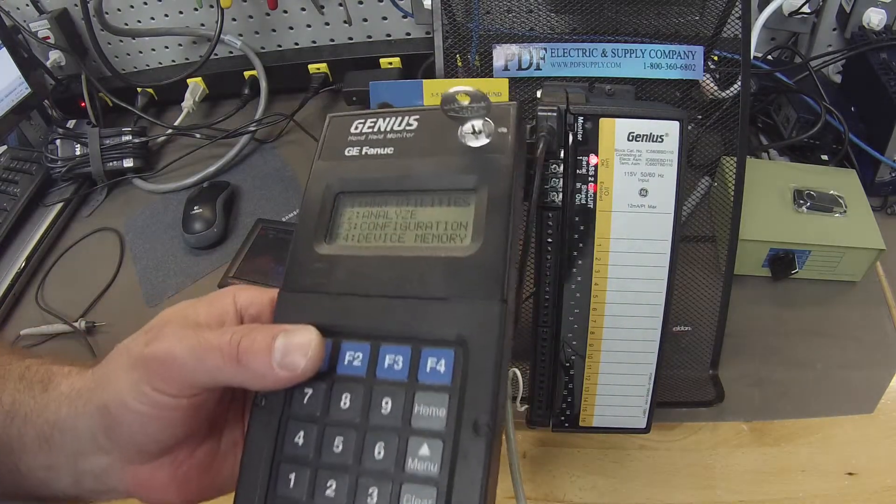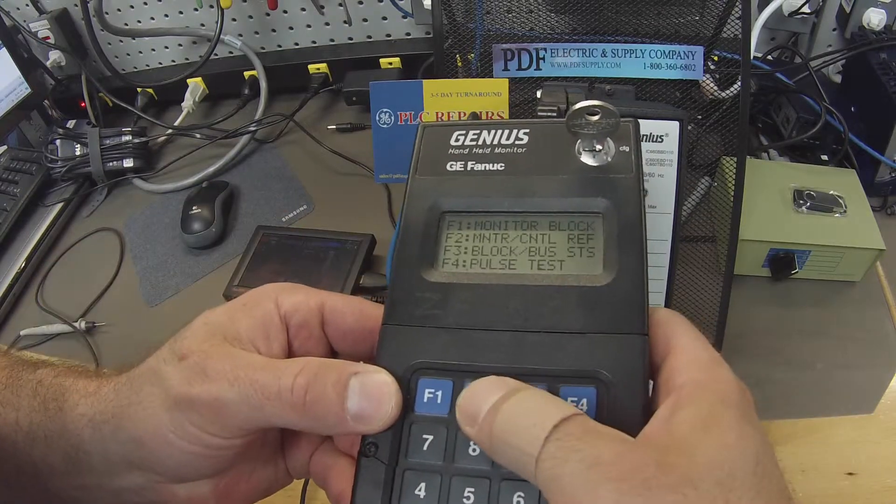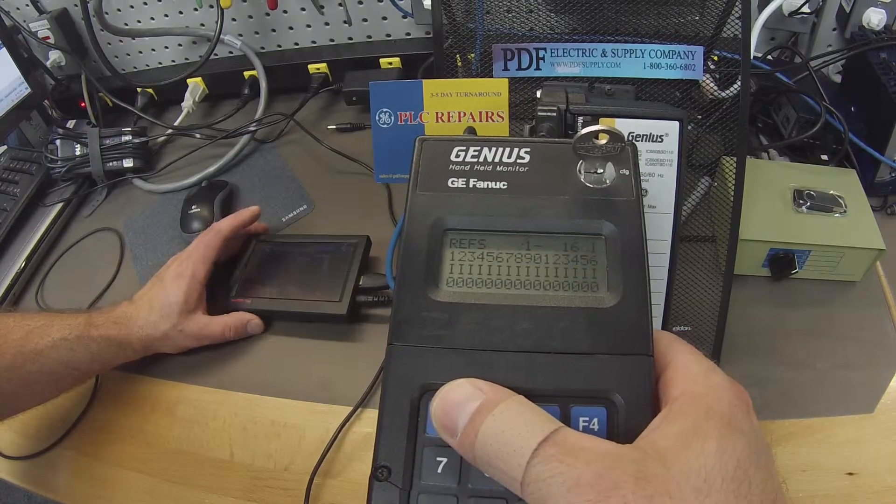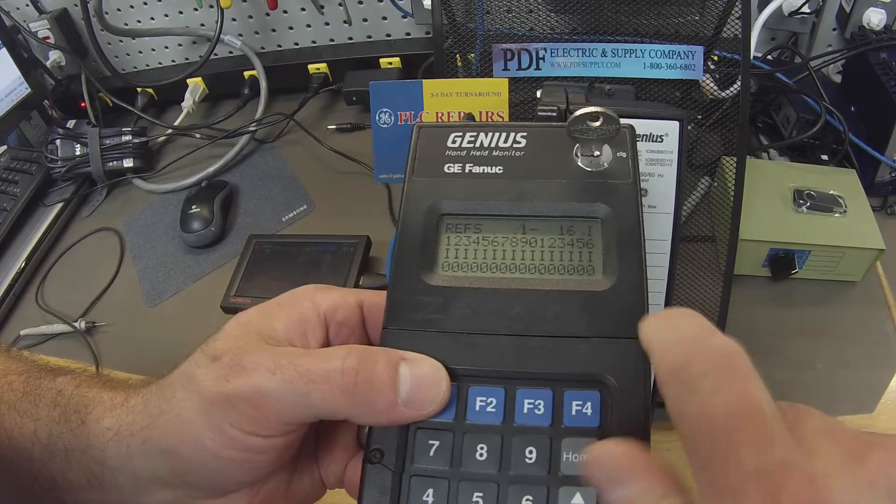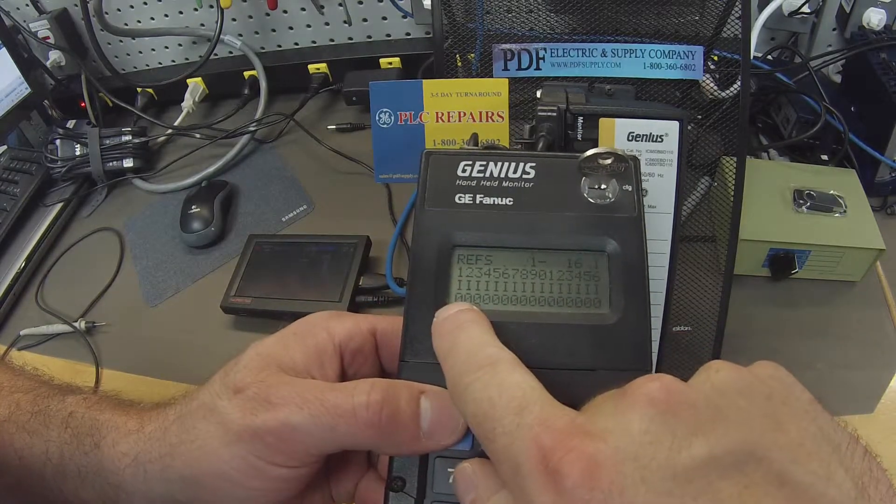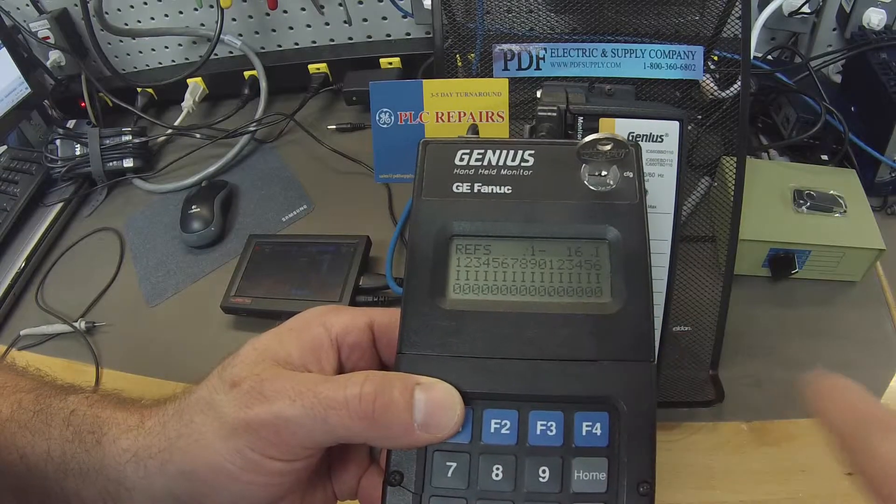Again, in the handheld monitor, we're going to go to F2, Analyze, F1, Monitor Block. Now, as I probe each input, these zeros at the bottom of my screen here will change to a 1.